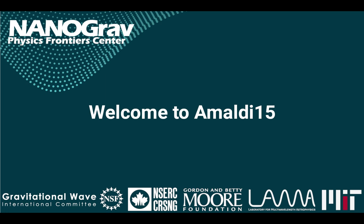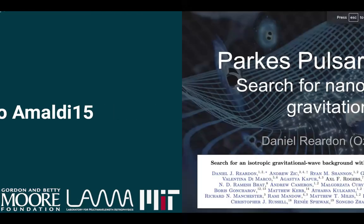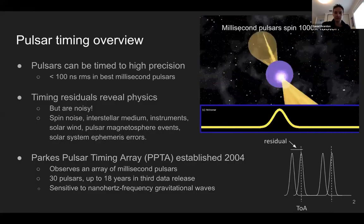Thank you very much Alexander. Next up is Daniel Ridden, who will be telling us about the search for stochastic gravitational wave background with the Parkes Pulsar Timing Array. I'm talking about our recent search for nanohertz frequency gravitational waves with the third data release of the Parkes Pulsar Timing Array — the paper is available if you want to check it out.